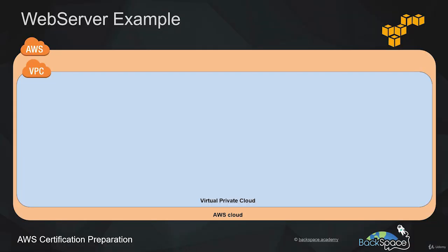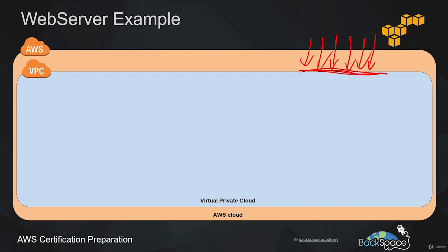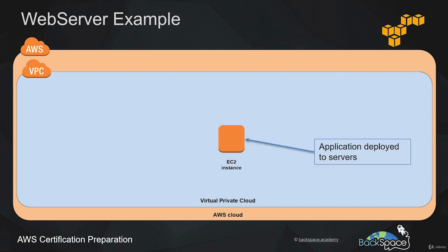Let's have a look at how we could use these services to deploy a web server in the AWS cloud. Here we have the AWS cloud and our Virtual Private Cloud, or VPC, located inside that. A VPC is our own private space within the AWS cloud and no one can enter unless we allow them to. We can launch an EC2 instance running our web application, for example WordPress.